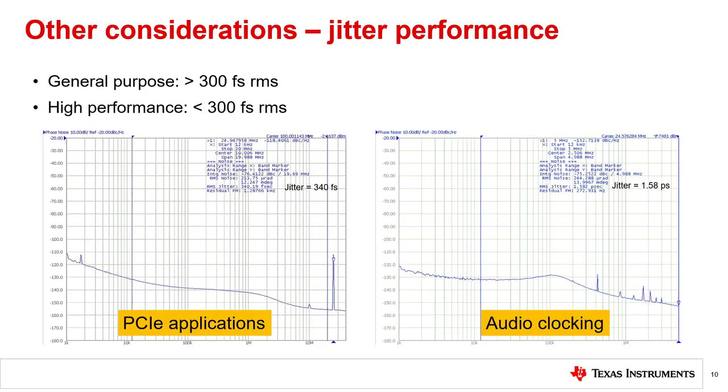So far we haven't talked too much about jitter performance. Not every clock generator design will need TI's industry best-in-class jitter performance of less than 50 femtoseconds, although it is always nice to have design margin. Generally speaking, there are two types of clock generators in terms of jitter: general purpose and high performance.